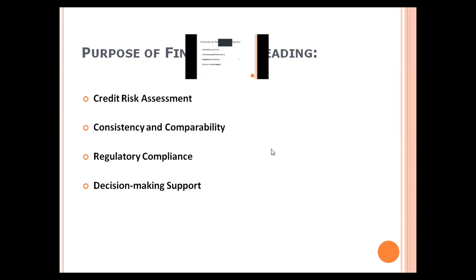The first purpose of financial spreading is credit risk assessment — the primary purpose is to assess the credit risk associated with lending to a borrower. By standardizing financial data, a bank can evaluate the borrower's ability to repay the loan and determine appropriate credit terms. The second purpose is consistency and comparability — financial spreading ensures all borrowers are evaluated consistently, regardless of differences in accounting standards such as US GAAP, IFRS, or Indian accounting standards.